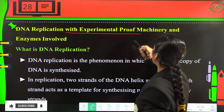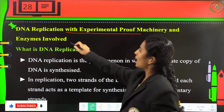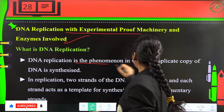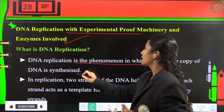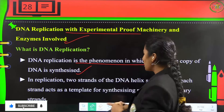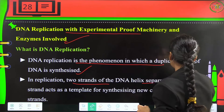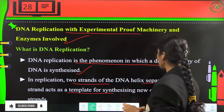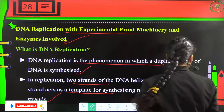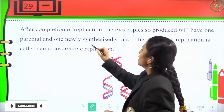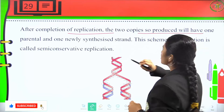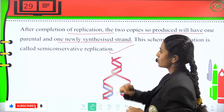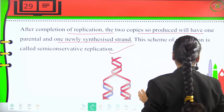DNA replication is a phenomenon in which a duplicate copy of DNA is synthesized. The two strands of the DNA helix separate, and each strand acts as a template for the synthesis of a new complementary strand. After replication, the two copies produced each have one parental and one newly synthesized strand — this scheme is called semi-conservative replication.